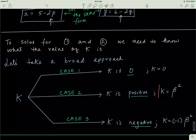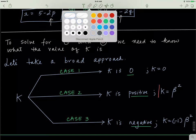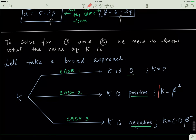The first and easiest case is k = 0. The second case is that k is some positive number, and the third case is that k is some negative number. In the language of math, a positive number can be represented as k = β², since any number multiplied by itself always gives a positive result. To represent a negative number, you take β² and multiply by −1.